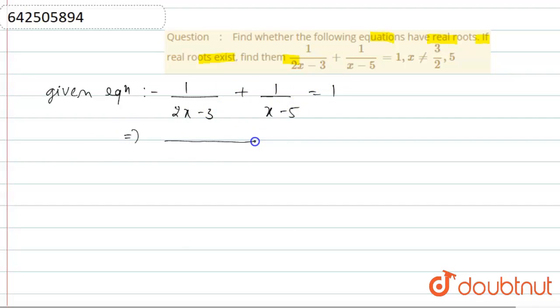Now if we take LCM, then 2x minus 3 multiplied with x minus 5 equals 1. This equals x minus 5 plus 2x minus 3. If we solve this, then we will get 3x minus 8.